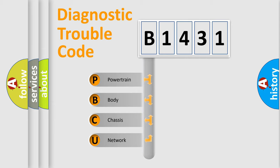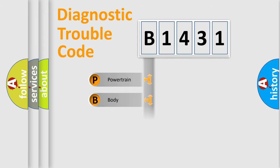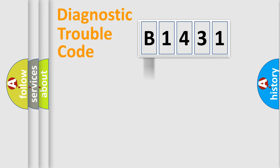We divide the electric system of the automobile into four basic units: Powertrain, Body, Chassis, and Network.